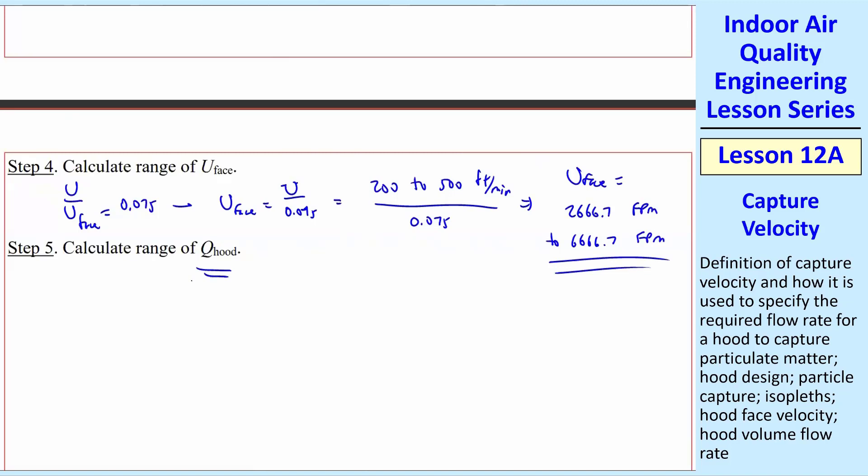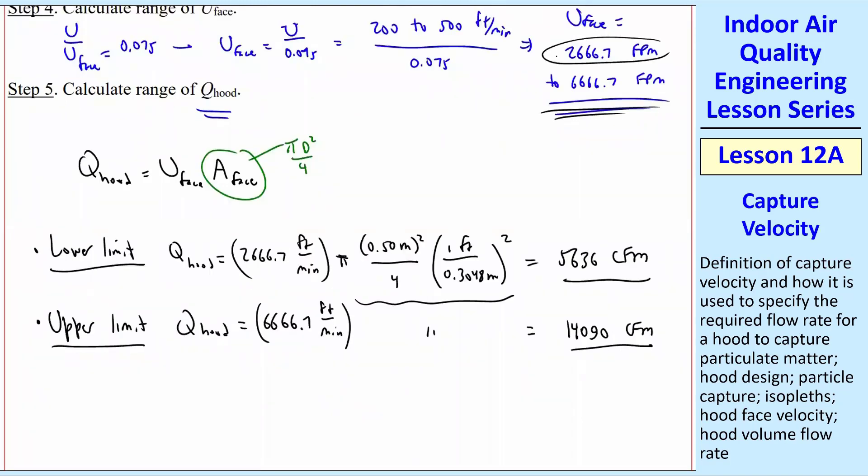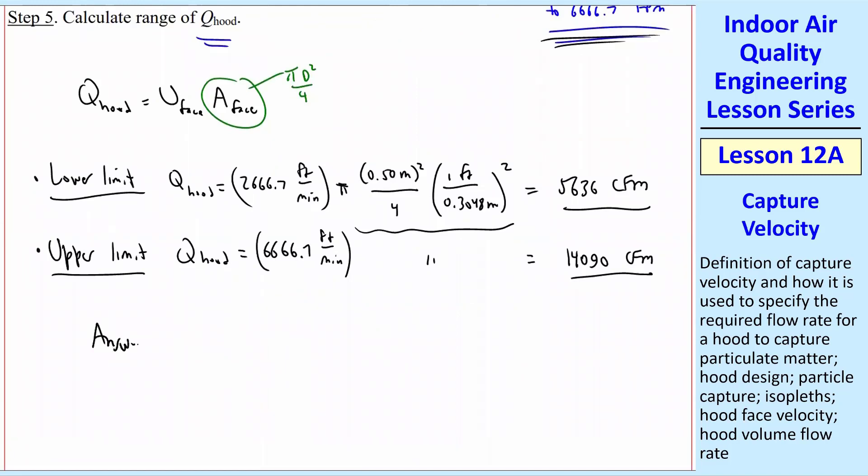And then finally, calculate the range of Qhood. So you know how to do this already from previous examples. It's just Qhood is equal to Uface times Aface. Aface is pi D squared over 4. So let's do the lower and upper limits. I'll use the lower value, and that gives me 5,636 CFM. And then you repeat for the upper limit. That gives us about 14,090 CFM. So my final answer, since I asked for a range, is 5,600. I'm rounding to two digits here, to 14,000.